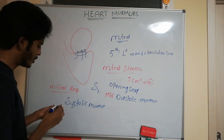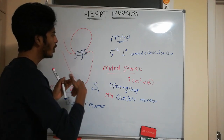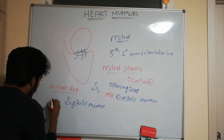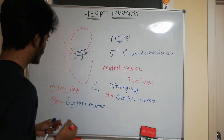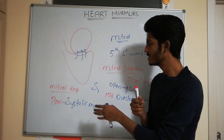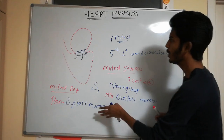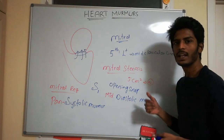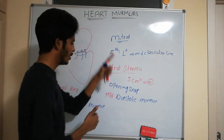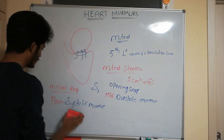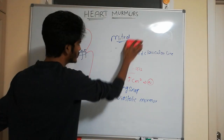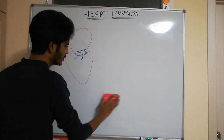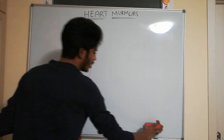Since it is a systolic murmur, throughout the entire duration of ventricular contraction blood is going back to the atria, making it a pan-systolic murmur — meaning the murmur lasts for the total duration of systole. For both mitral stenosis and mitral regurgitation, we hear the murmur at the fifth intercostal space, mid-clavicular line, on the left side of the chest.